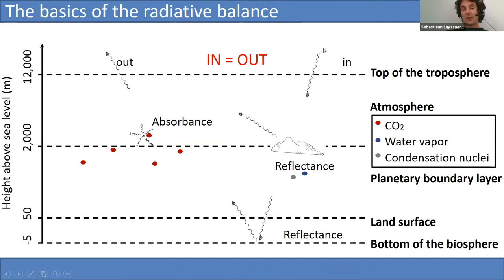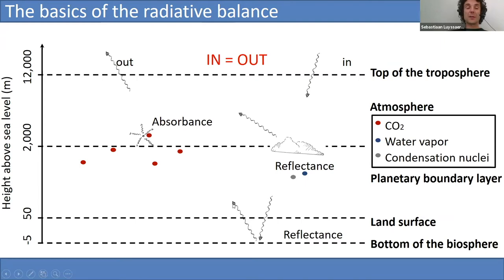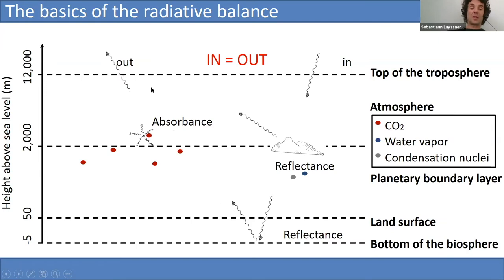Basically, we have incoming radiation from the sun. Part of it is directly reflected by clouds — clouds form because there are condensation nuclei in the atmosphere and water vapor. Some light passes through the clouds and reaches the surface; some energy is reflected right away, while other energy is absorbed by the earth, transforming shortwave radiation into longwave radiation. CO2 is a very efficient absorber of this longwave radiation, preventing it from leaving the atmosphere. In balance, incoming and outgoing radiation are equal, so the temperature of the earth should be more or less constant over the longer term.